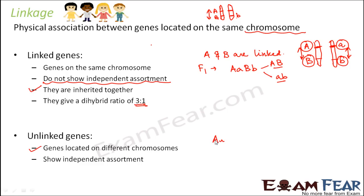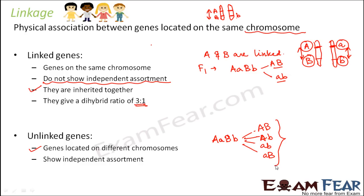If you have the same heterozygous scenario with unlinked genes — AaBb — you can have four possible gametes. Because more gametes are formed, more recombinants will be produced. Future generations will show some parental combinations but more recombinations. This is why the F2 ratio in Morgan's experiment was different from Mendel's experiment: in Mendel's experiment with unlinked genes, more gametes were produced, more recombinations occurred, giving the 9:3:3:1 ratio.